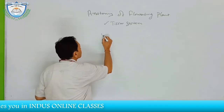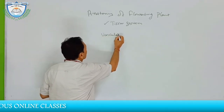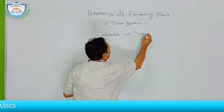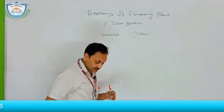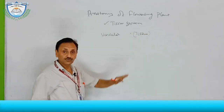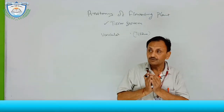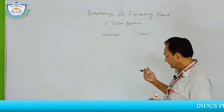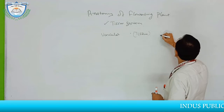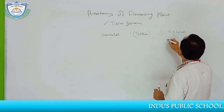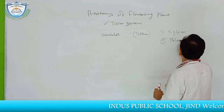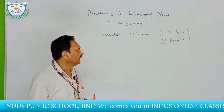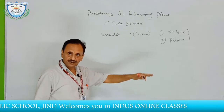Now, the vascular cells — vascular tissue. In a previous lecture, we discussed that this vascular tissue is not a simple tissue but a complex tissue because it is made up of more than one type of cells. This vascular tissue is of two types: one is the xylem and another is the phloem. We have discussed in detail the function and structure of the xylem and phloem.